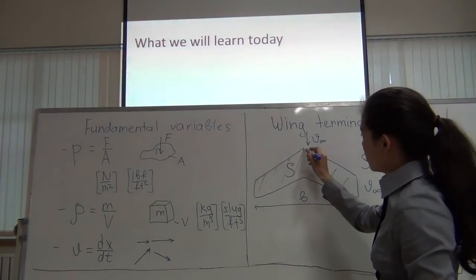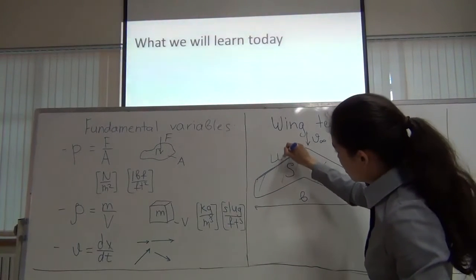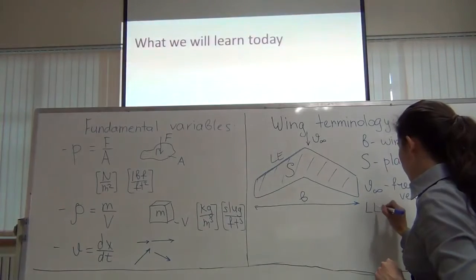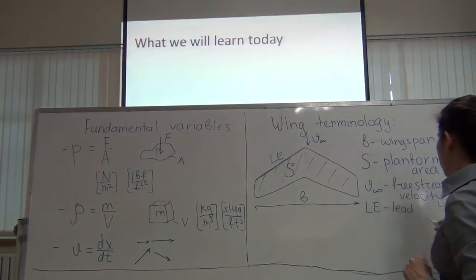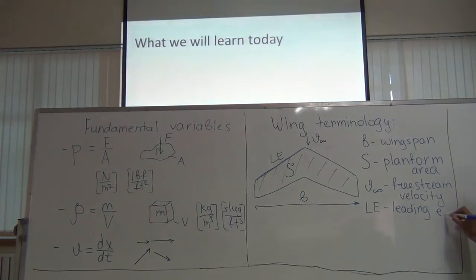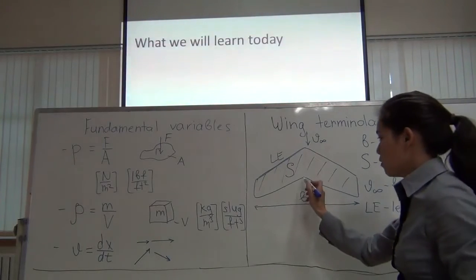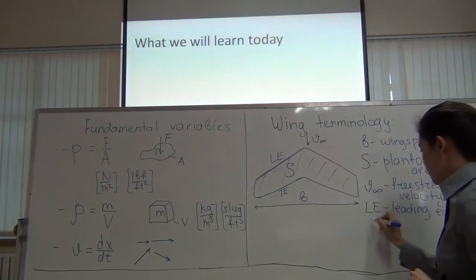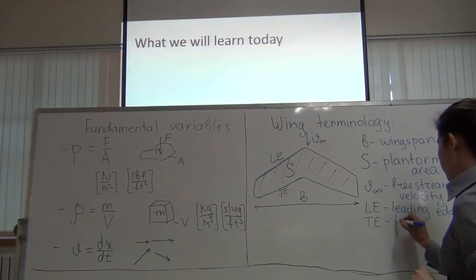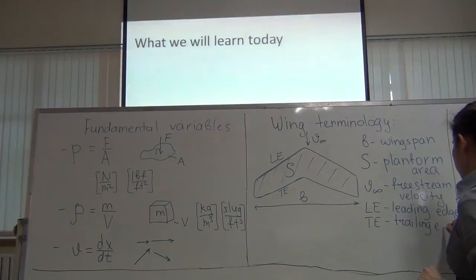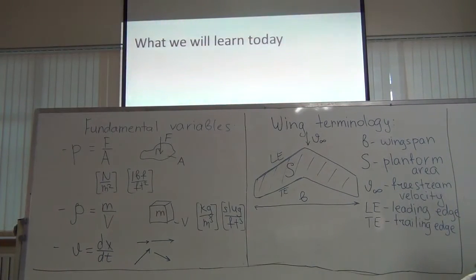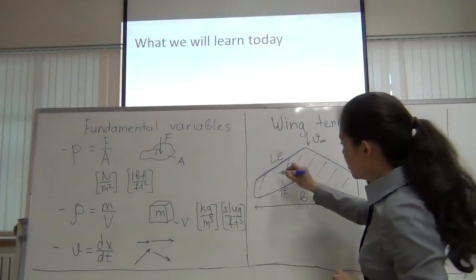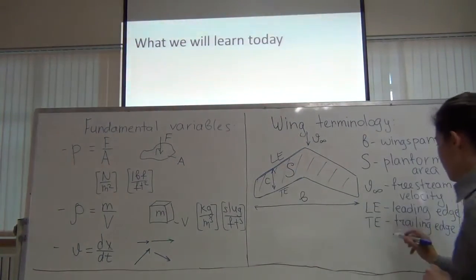The front edge of the wing is called the leading edge — it's the first to meet the flow of air. The other edge is called the trailing edge — the last to encounter the airflow. The distance between the leading edge and the trailing edge is called the chord, denoted by c.